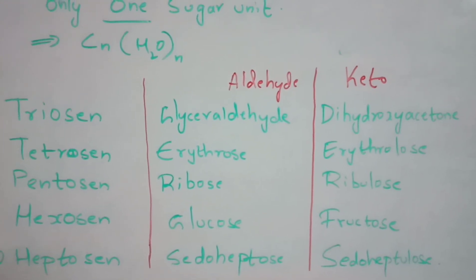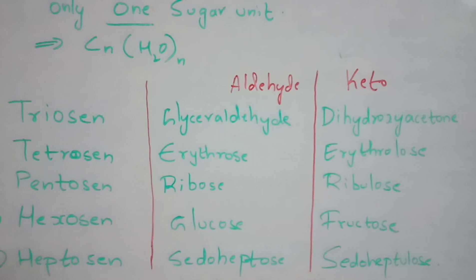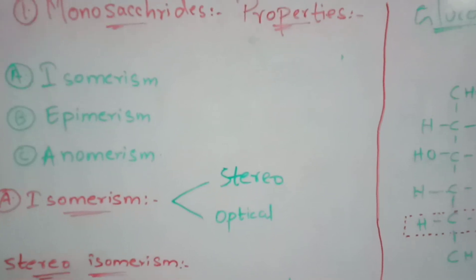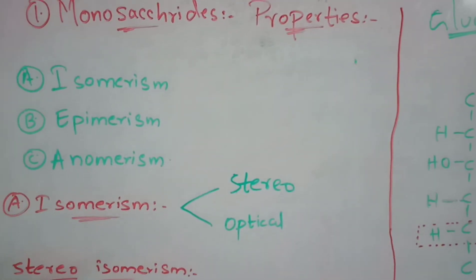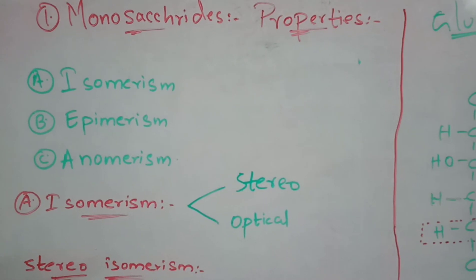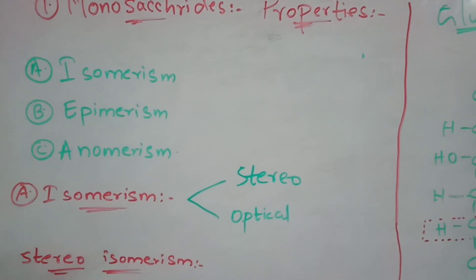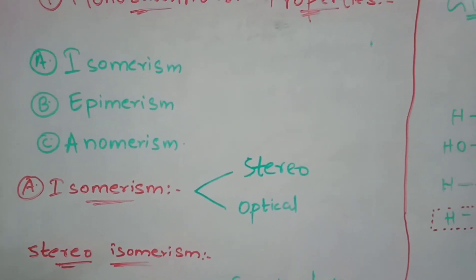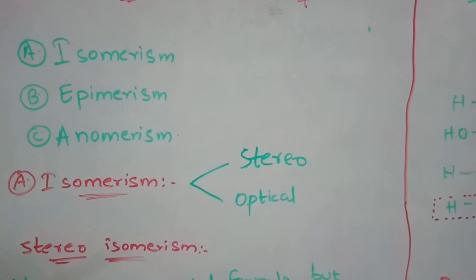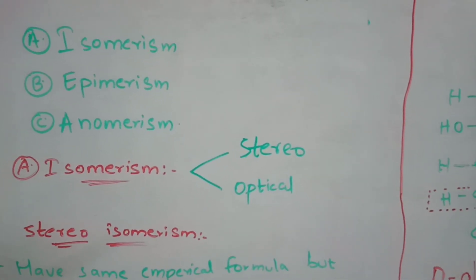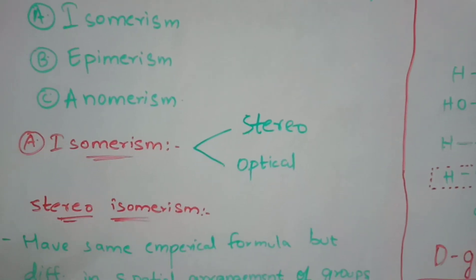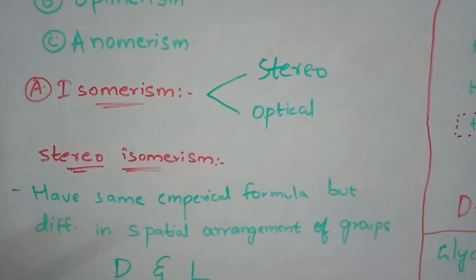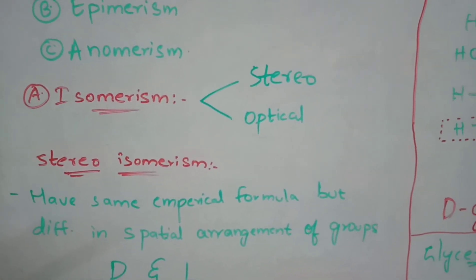Now let us discuss the properties of monosaccharides, through which you can understand the structure of glucose and fructose. The properties of monosaccharides include isomerism, epimerism, and anomerism. Isomerism exhibits in two ways: stereoisomerism and optical isomerism. Stereoisomerism refers to compounds that have the same empirical formula but differ in the spatial arrangement of groups.